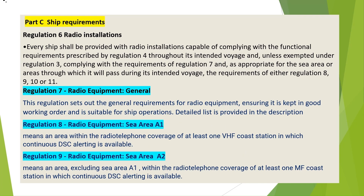Part C: Ship Requirements. Regulation 6: Radio Installations. Every ship shall be provided with radio installations capable of complying with the functional requirements prescribed by Regulation 4 throughout its intended voyage and, unless exempted under Regulation 3, complying with the requirements of Regulation 7 and, as appropriate for the sea area or areas through which it will pass during its intended voyage, the requirements of either Regulation 8, 9, 10, or 11.